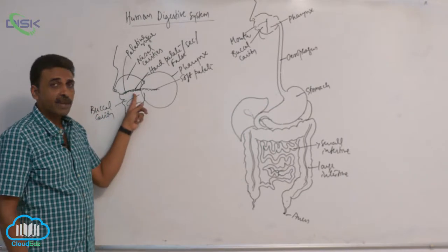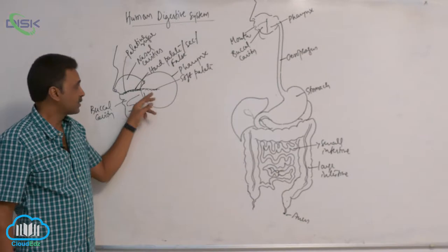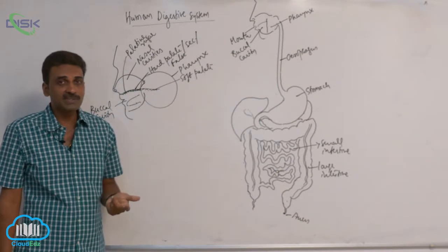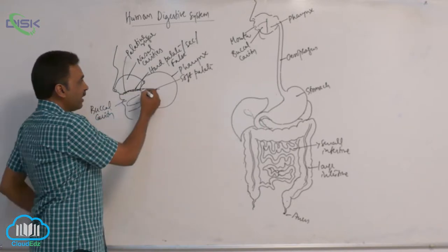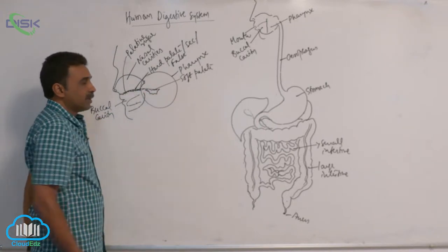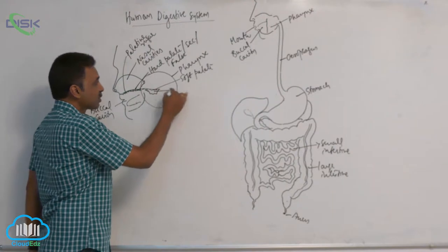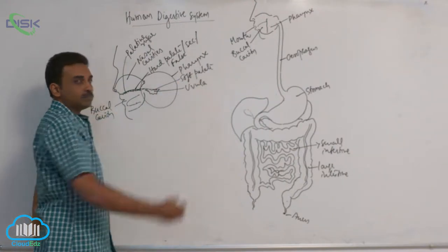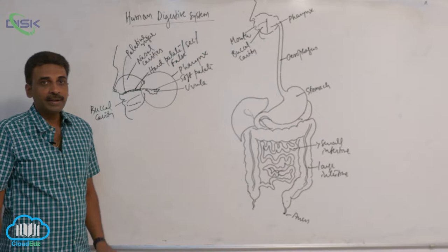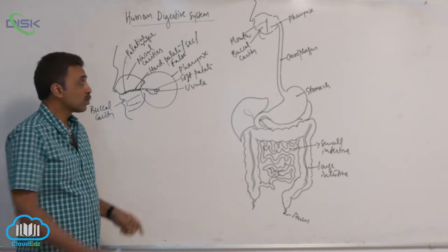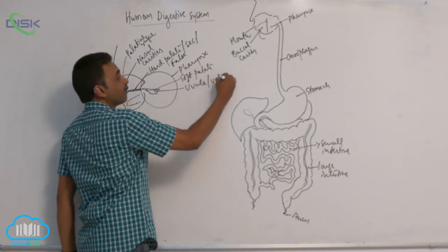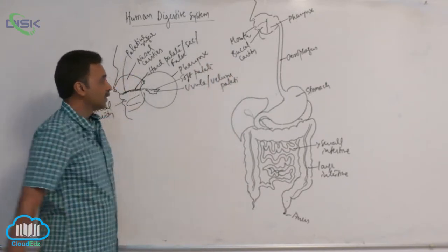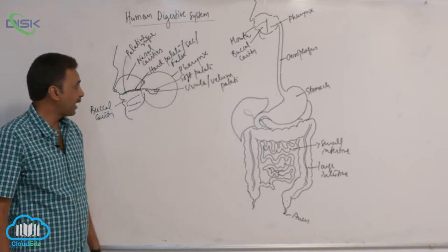In the case of the hard palate, there are the maxilla and palatine bones, but the soft palate has no bones — it is simply made up of muscles. It hangs downwards, and the hanging portion is called the uvula, also known as the velum palatine.